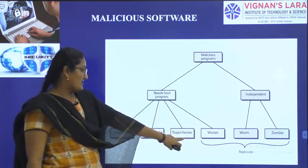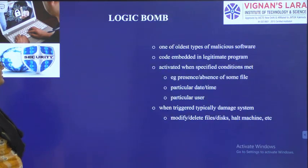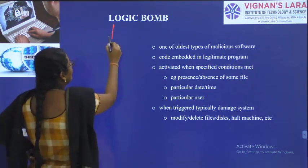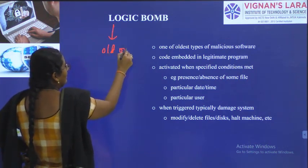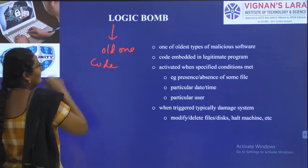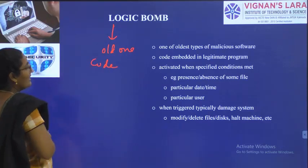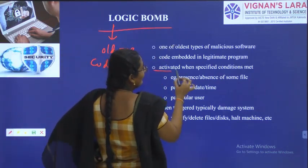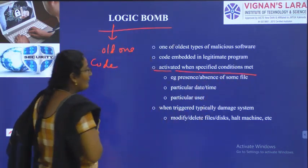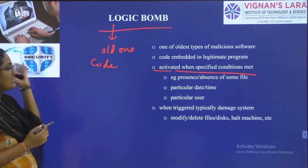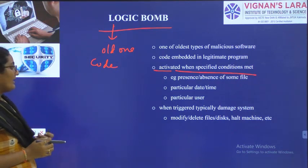Let us look at trapdoors, logic bombs, and Trojan horses one by one. First, what is a logic bomb? It is the oldest type of malicious software. A piece of code is embedded in your program and it will activate when all the conditions are met. When those conditions are satisfied, it will propagate. It can modify files and delete files.